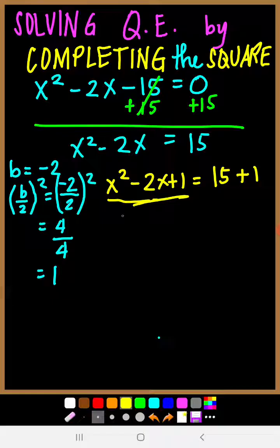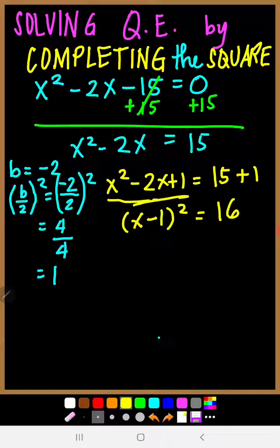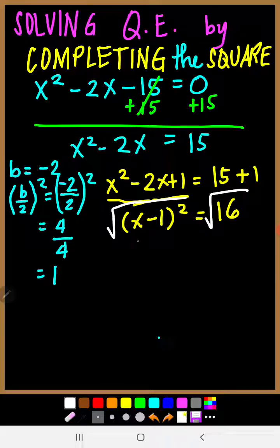The factor of this perfect square trinomial — this becomes x minus 1, squared, equals 16. Now you can use extracting the square root, so you just get the square root of both sides. This becomes x minus 1 equals positive or negative 4.